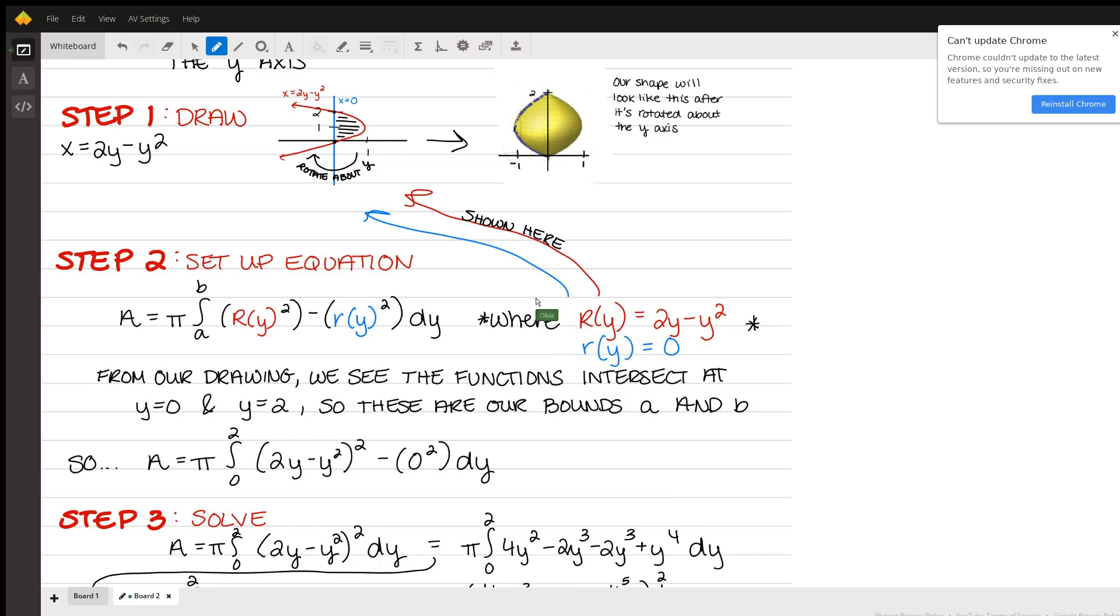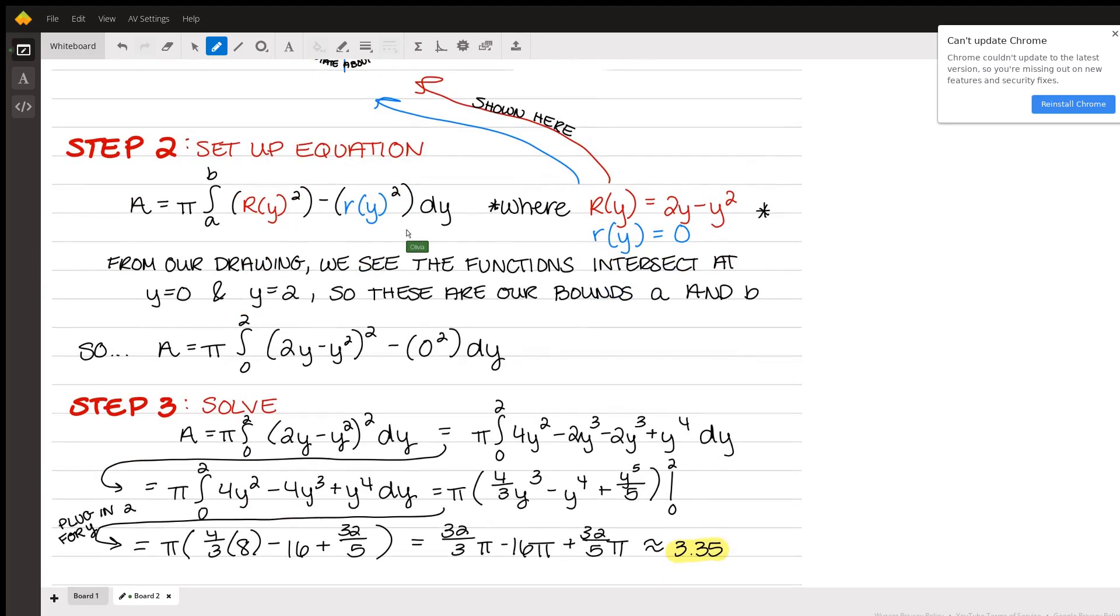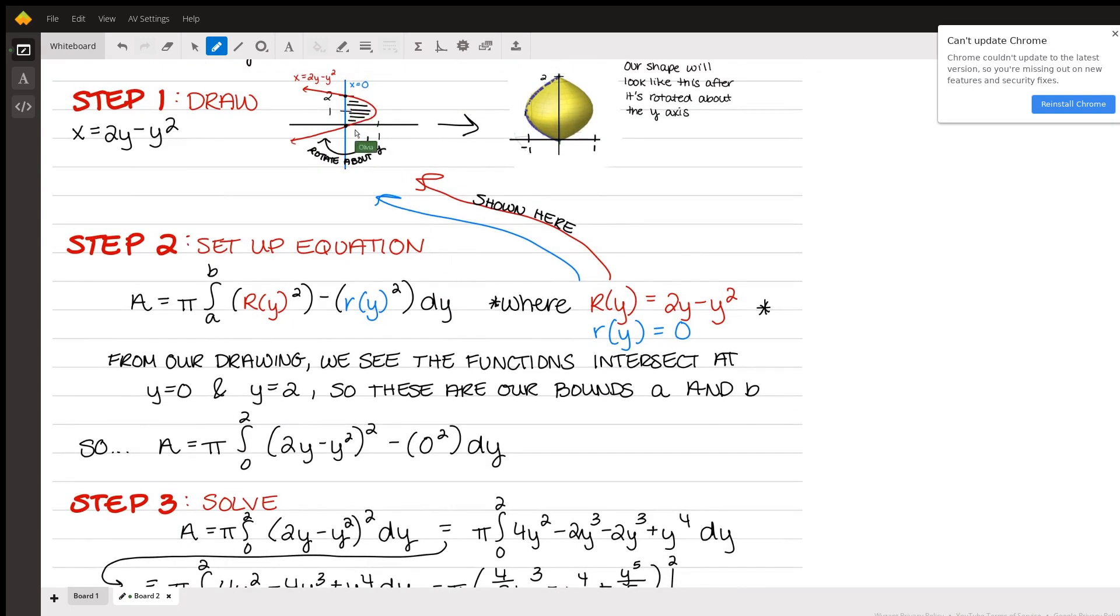Now you're going to see a lot of teachers use this big R of y and little r of y, which is just kind of representing the big R is the outermost function and the little r is the innermost function, which you can get way more in detail about that with different examples. But in our case, we're just worried about the rightmost function and the leftmost function. So now that we've identified where these fall into our equation from our drawing, we could also see that the functions intersect at y equals 0 and y equals 2, like I said, these two bounds. So these are going to be our bounds of integration.